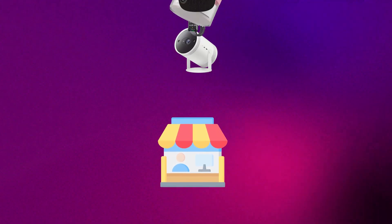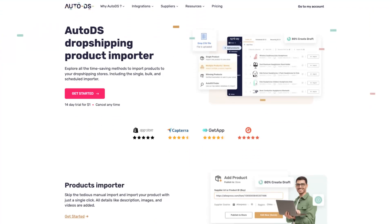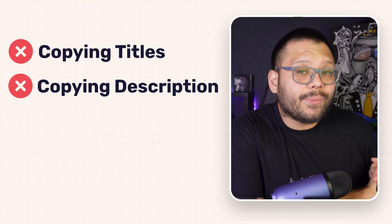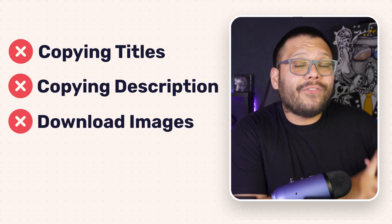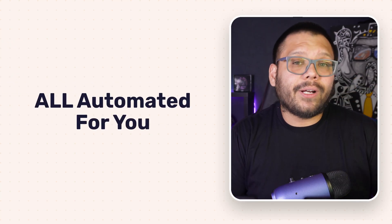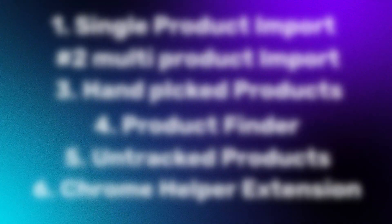Today, I'm going to show you everything that you need to know on how you can start importing products to your dropshipping store using AutoDS. This method is going to eliminate any need for doing any manual work to import products to your store, meaning you don't have to copy over any titles, descriptions, or download any photos, because it's all going to be automated for you in six different ways that I'm going to cover in this video.